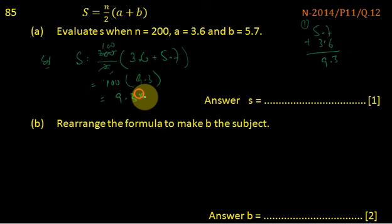So 9.3 multiplied by 100 becomes 930. When we multiply by 100, we move the decimal two places to the right, so it is 930.